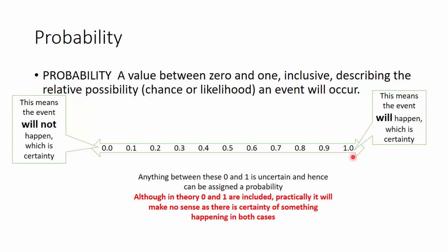So, which means it will happen. There's no chance that it will not happen. So any event which falls between these two limits of 0 and 1 are called probability. The extremes are certainty.